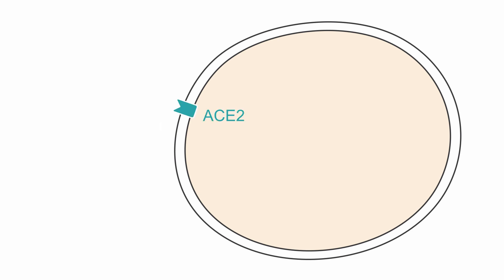After the virus is transmitted and enters the patient's body, the cells of the nose have a cell surface receptor called angiotensin converting enzyme 2, or ACE2. This receptor is also present in other organs, but cells of the nose exhibit a very high receptor density. Since the virus is inhaled through the nose, that's where it will likely attach first.